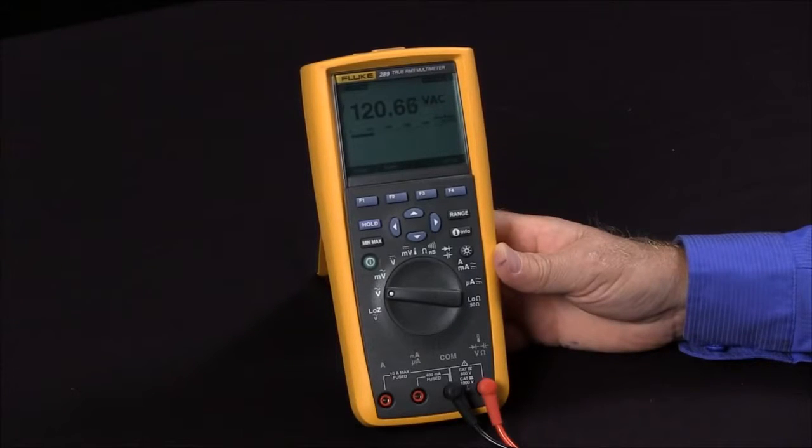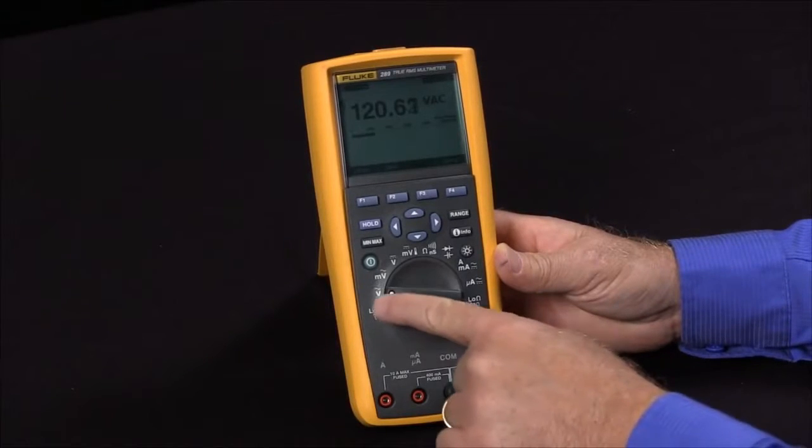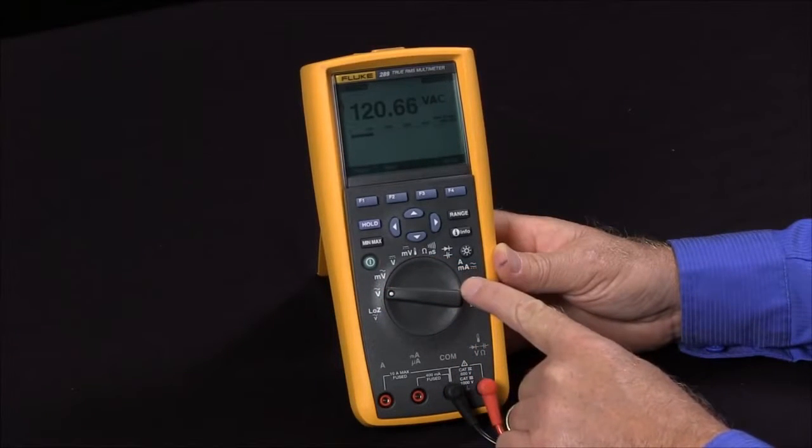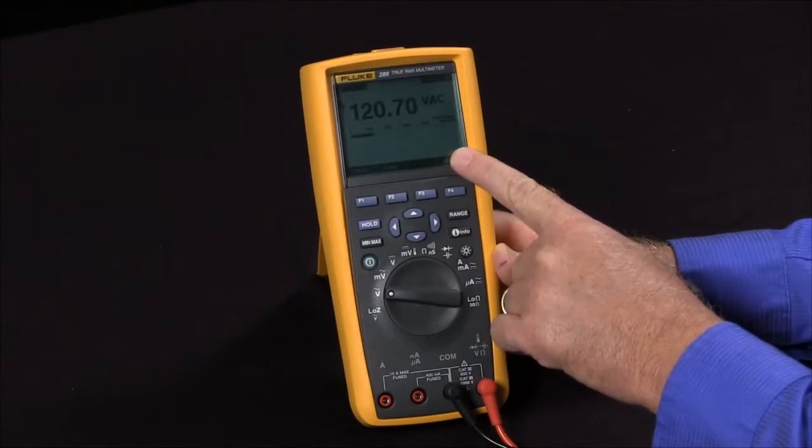or produce a report to document exactly what the voltages, the currents, anything are. Any of the functions you see on this can be recorded over time using the record feature inside the Fluke 289.